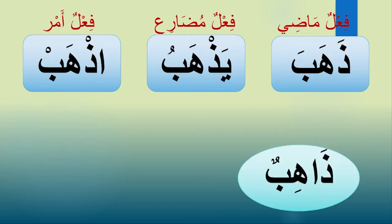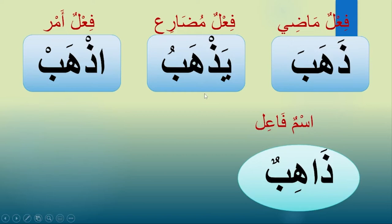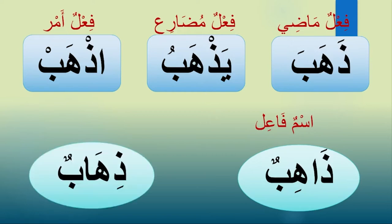ذاهب is اسم فاعل. اسم فاعل means the one who is doing the verb, and it is taken from the verb root itself. So if you want to translate it, it can mean 'he is going' now, or 'he will go' in the future, because فعل مضارع can represent both present and future tense.